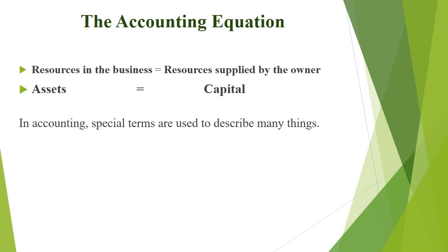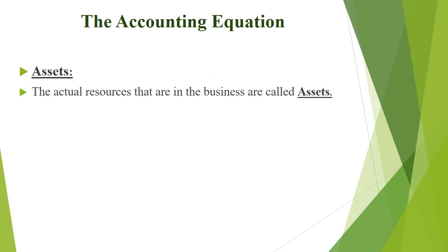Now we will discuss them one by one. In accounting, special terms are used to describe many things. We will discuss assets — what are assets — and what is capital. The actual resources that are in the business are called assets. The resources which any business has owned are called assets.